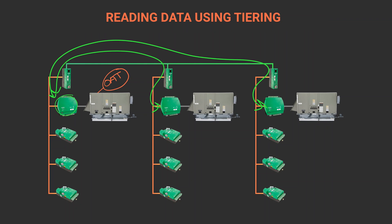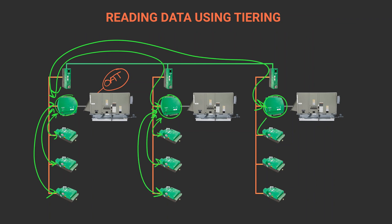Here, each air handler will request the outside air. The VAVs will then request the outside air from their air handler. Since the outside air requests from the VAVs only go to their air handlers on the same MSTP segment, the number of messages on the network between the air handlers is reduced.